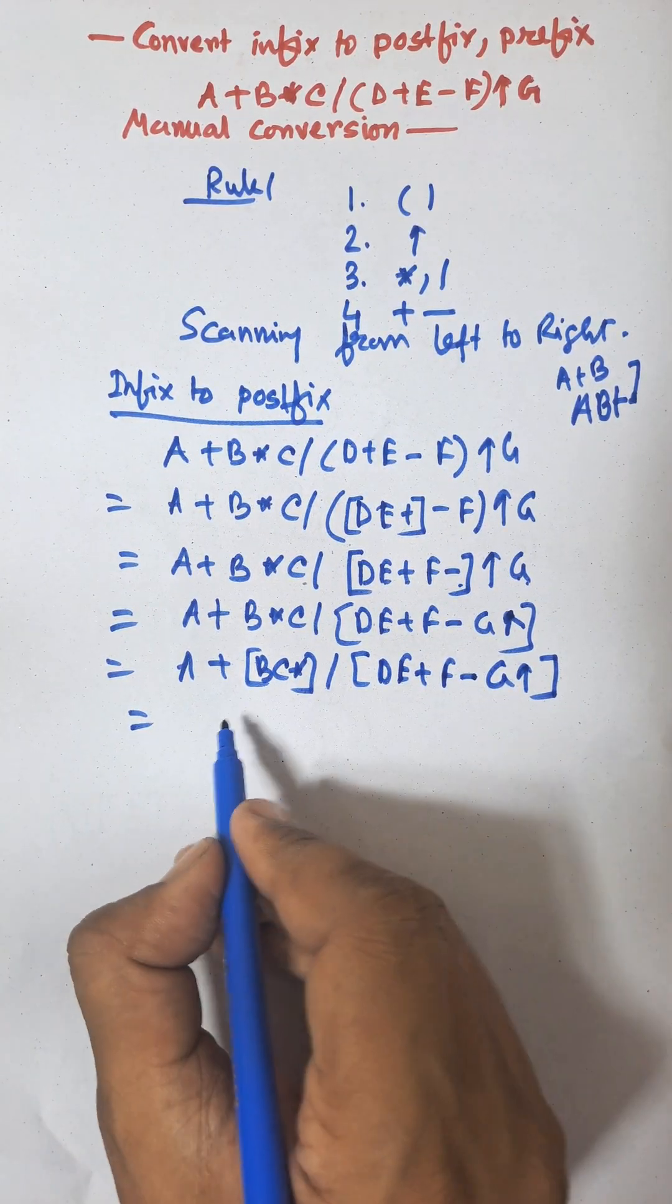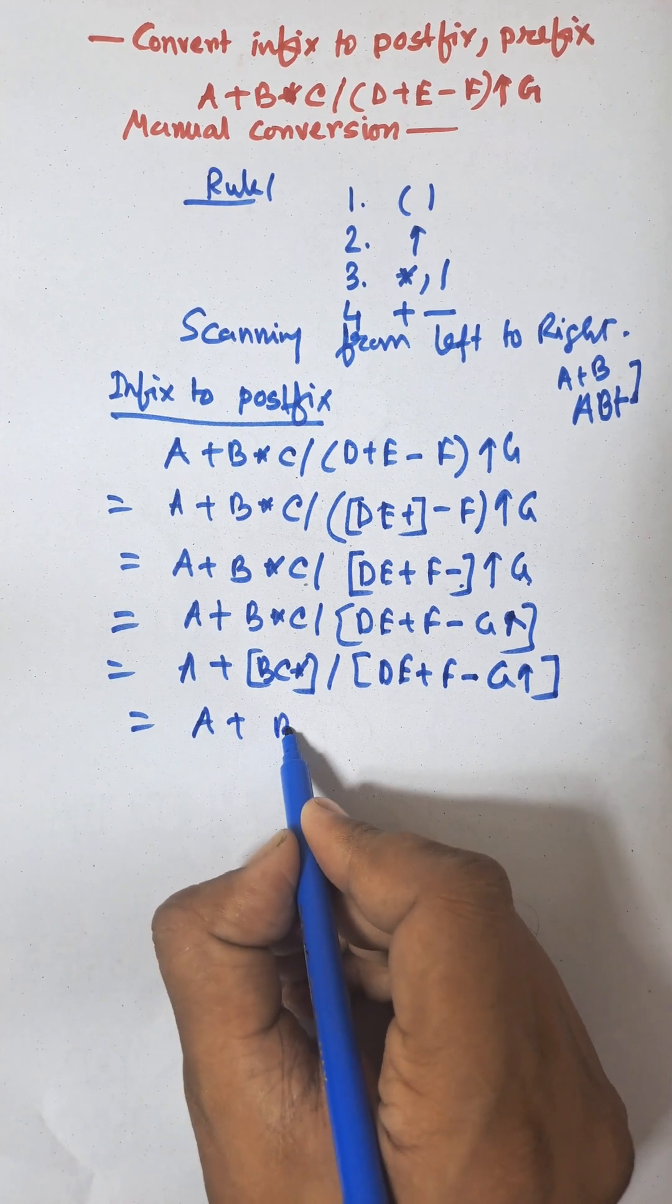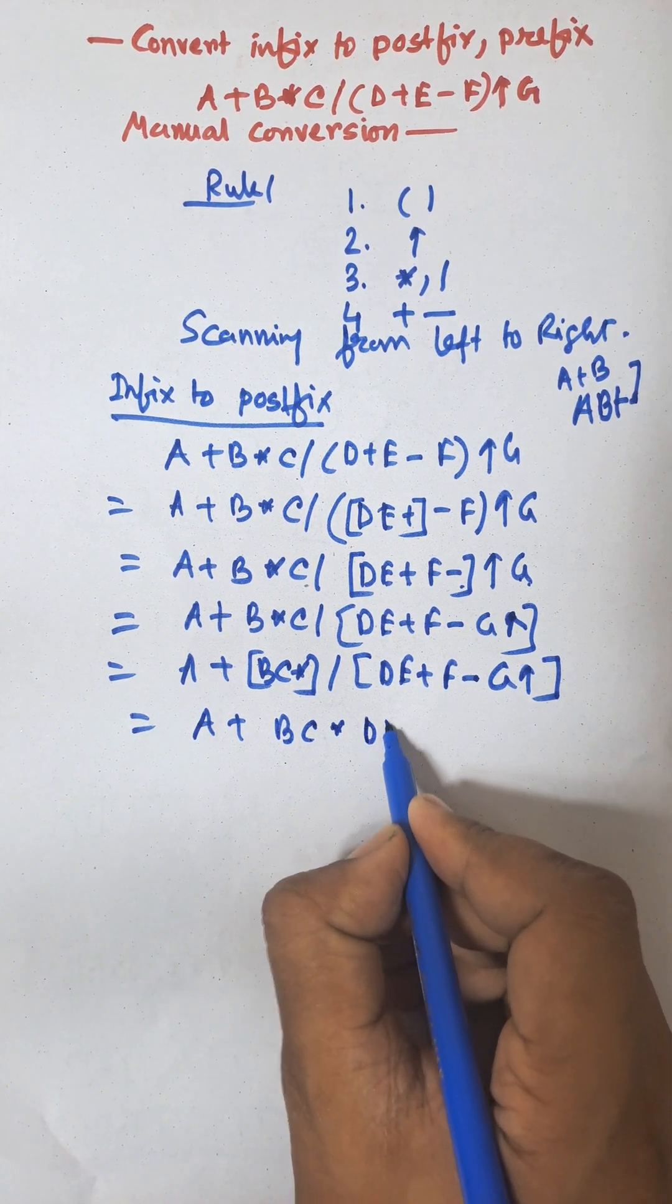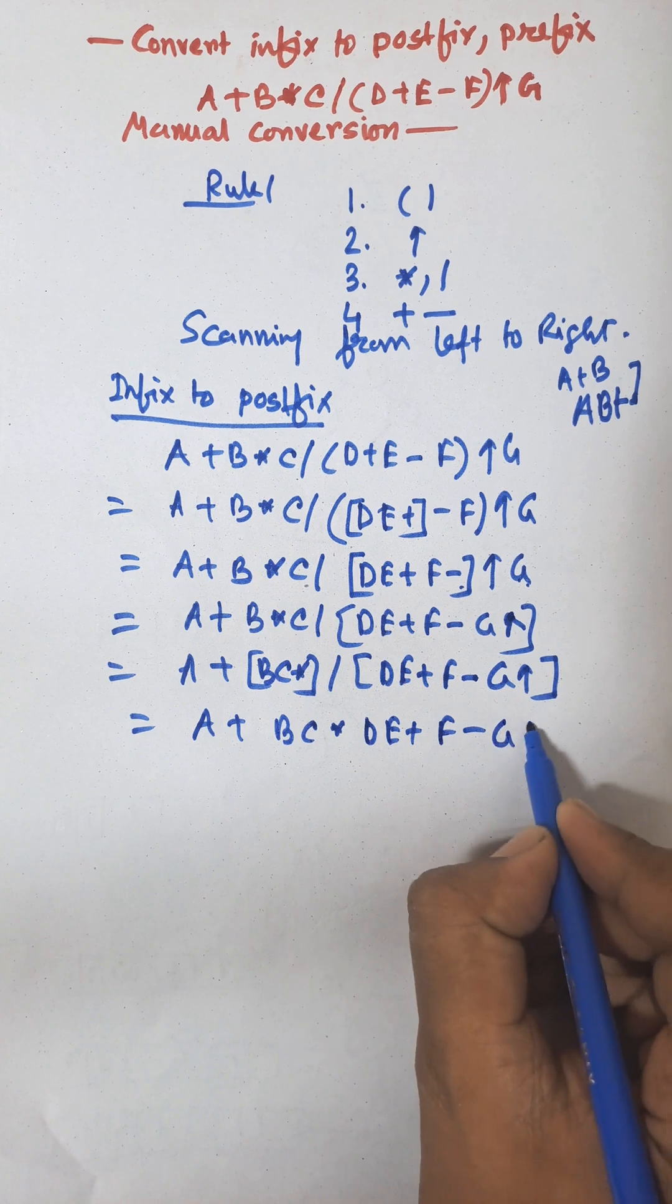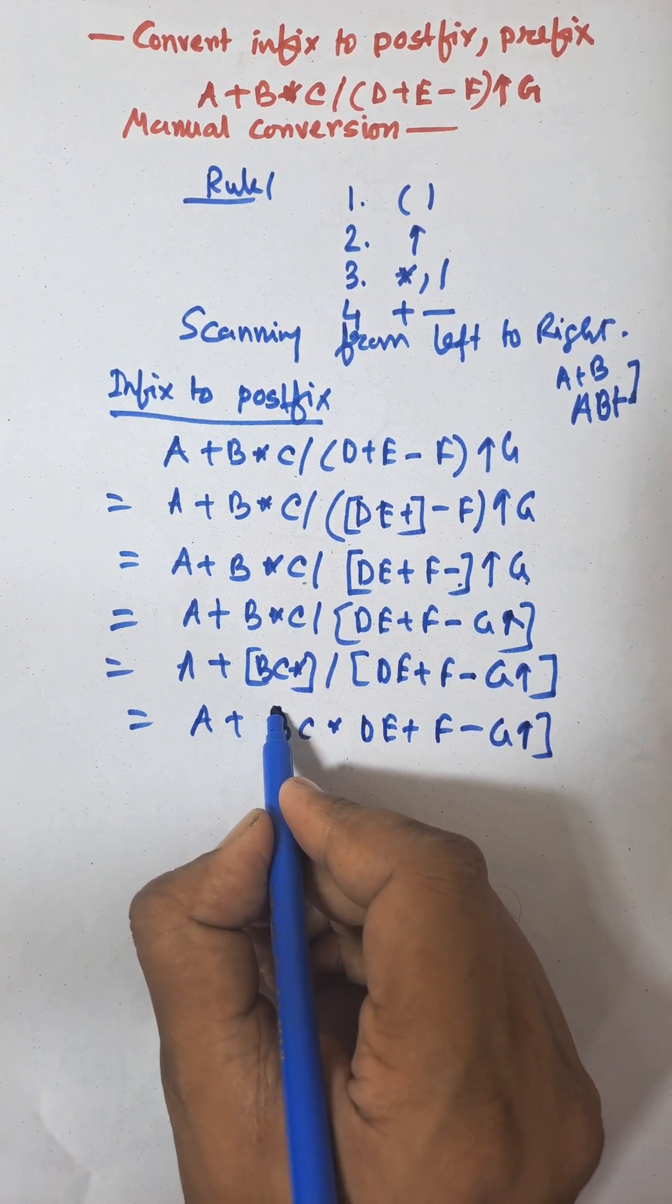Now division operation will be performed. That is B C into D E plus F minus G exponential and division.